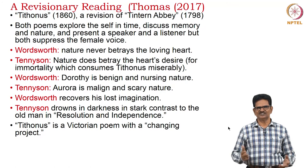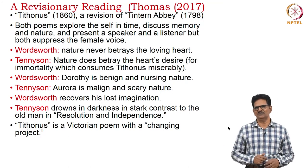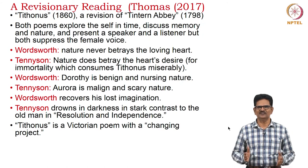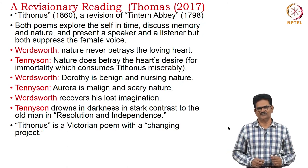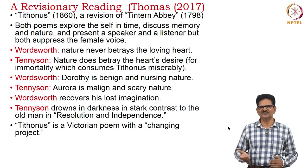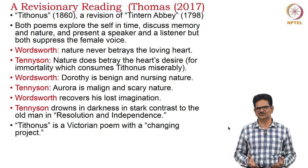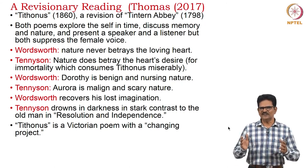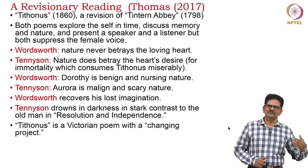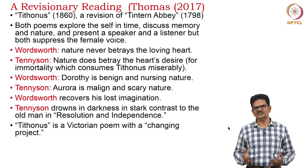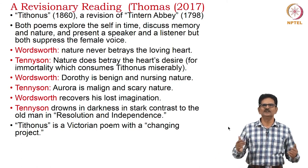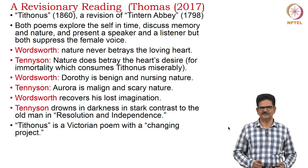A critic called Thomas offers a revisionary reading of this poem, comparing it with Tintern Abbey. Both poems explore the self in time, discuss memory and nature, and present a speaker and listener, but both suppress the female voice. In the case of Wordsworth, nature never betrays the loving heart. But in Tennyson, nature does betray the heart's desire for immortality, which consumes Tithonus miserably. In Wordsworth, his sister Dorothy represents a benign and nurturing nature. But in Tennyson, Aurora is a malign and scary nature. Wordsworth recovers his lost imagination in Tintern Abbey, but Tennyson drowns in darkness — in stark contrast to the old man in Wordsworth's Resolution and Independence. Therefore, Thomas says Tithonus is a Victorian poem with a changing project.